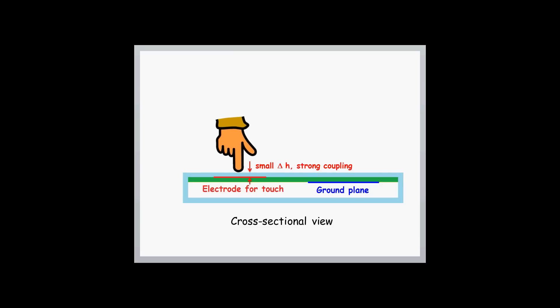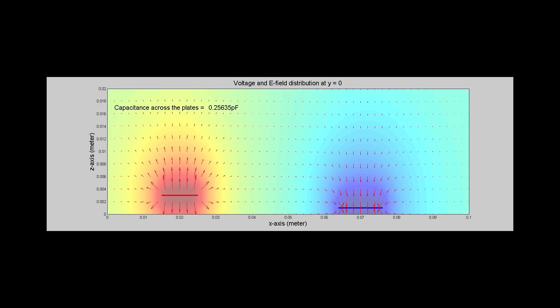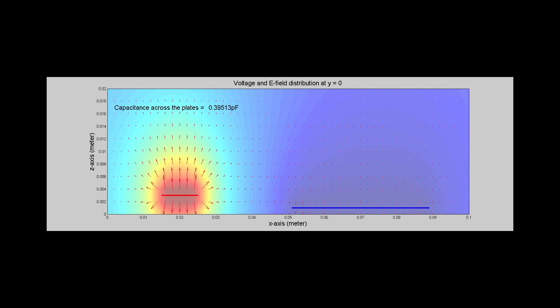One common method is by putting the touchpad closer to the user and hiding the ground plane deeper inside the housing. Another method, which is the centerpiece of this video, is by having a bigger ground plane compared to the touchpad.